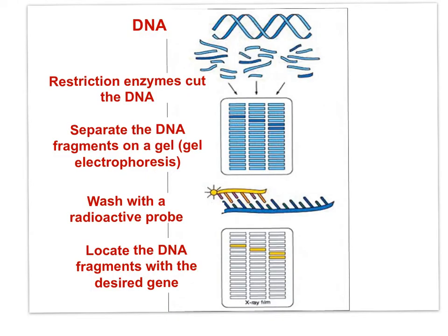In this image, we can see the DNA from the organism of interest cut into fragments with a restriction enzyme, and then the fragments are separated on a gel in a process known as gel electrophoresis. The gel is then washed with a radioactive probe, or primer, and the DNA fragment with the gene of interest can be isolated.